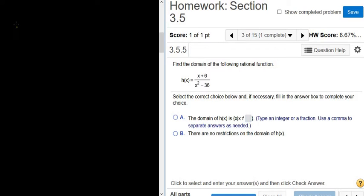Find the domain of the following rational function. So h of x is equal to x plus 6 over x squared minus 36. So the domain is the set of all numbers that you can plug in that make sense.